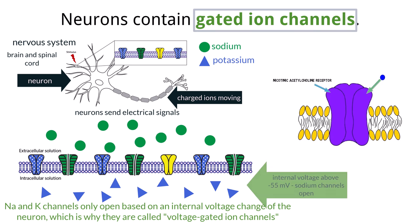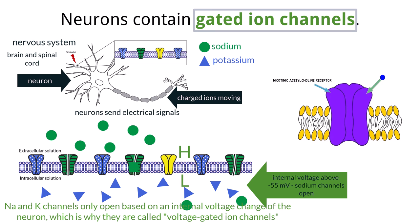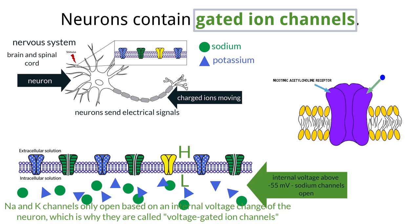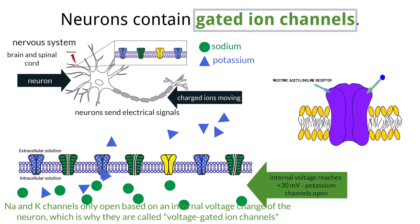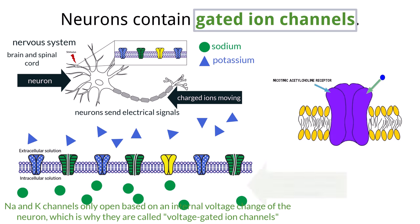If the internal voltage raises above negative 55 millivolts, it will trigger a conformational change in any adjacent sodium channel, causing them to open and support the facilitated diffusion of sodium ions to move inside the cell along a high-to-low concentration gradient. Because sodium ions are positively charged, their movement into the cell will further increase the internal voltage. When the internal voltage reaches around 30 millivolts, the potassium channels go through a conformational change to open. This releases the high concentration of potassium ions to the outside of the cell via facilitated diffusion, decreasing the internal voltage back down into the negatives and causing both ion channels to close.